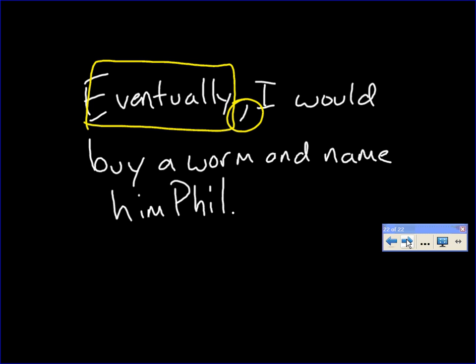Jordan, could you repeat your Phil sentence? How would you speak it? Speak it again. Eventually, I would buy a worm and name him Phil. There's always a little pause. Eventually, I would buy a worm and name him Phil. Every spring break, my family and I, there's a noticeable but short pause. That's where your comma is.